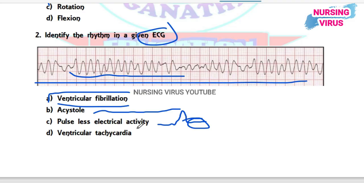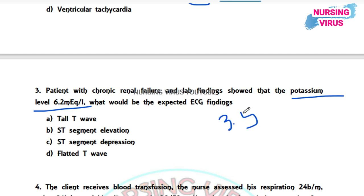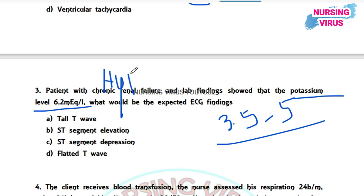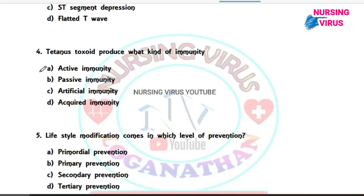Question 3: A patient with chronic renal failure has a potassium level of 6.2 mEq/L. What would be the expected ECG finding? The options are tall T-wave, ST segment elevation, ST segment depression, and flat T-wave. The normal potassium range is 3.5 to 5 mEq/L, so this patient has hyperkalemia. The correct answer is tall T-wave. ST segment elevation indicates MI, ST depression indicates angina pectoris, and flat T-wave is seen in hypokalemia.